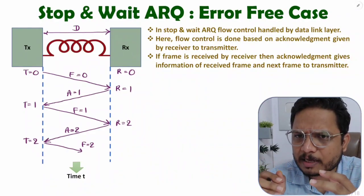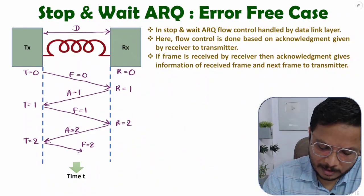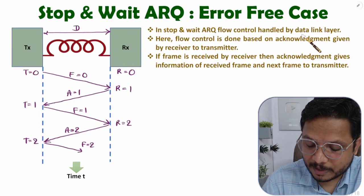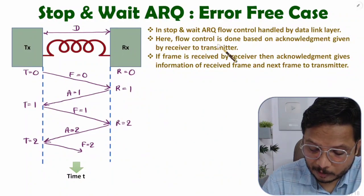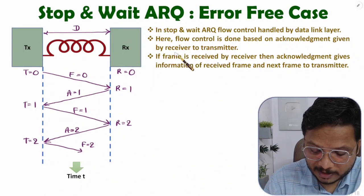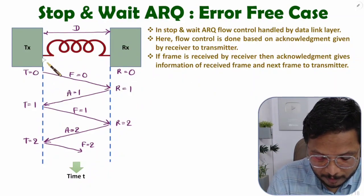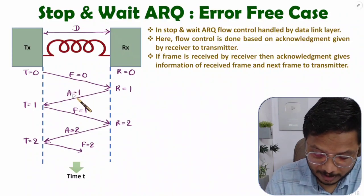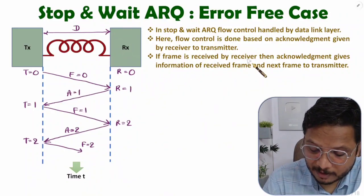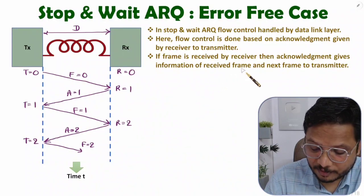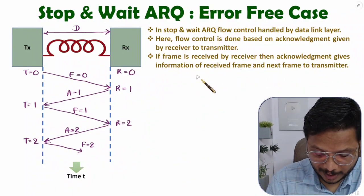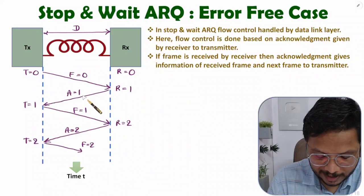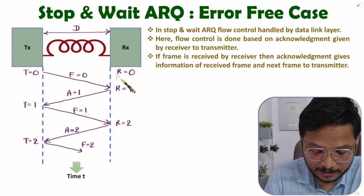In stop-and-wait ARQ protocol, flow control is handled at the data link layer. Flow control is done based on acknowledgement given by the receiver to the transmitter. One frame is forwarded by the transmitter, and the next frame is requested by the receiver via acknowledgement. If a frame is received, the acknowledgement gives information about the received frame and the next frame expected by the transmitter.